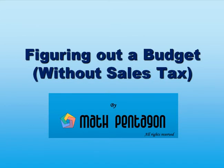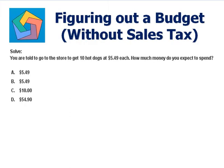Hi, today we are going to learn about figuring out a budget without sales tax. Let's look at a problem. You are told to go to the store to get 10 hot dogs at $5.49 each. How much money do you expect to spend? The price of one hot dog is given here, which is $5.49.